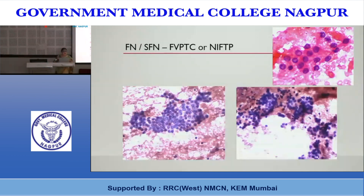Returning to the follicular neoplasm category with enough cells and well-visualized features: abundant cellularity with a flat sheet of cells in which most nuclei show pale centers — likely intranuclear inclusions — with follicular arrangement. When reporting such a case, we expect histopathology to be either FVPTC or NIFTP.